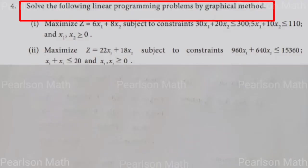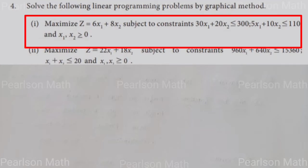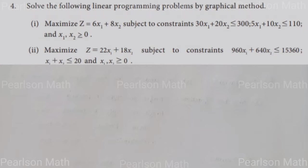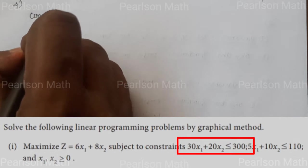Students, let's solve the following linear programming problem by graphical method. Maximize Z equals 6x₁ plus 8x₂ subject to constraints: 30x₁ plus 20x₂ less than or equal to 300, and 5x₁ plus 10x₂ less than or equal to 110.